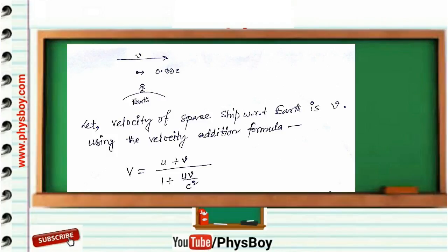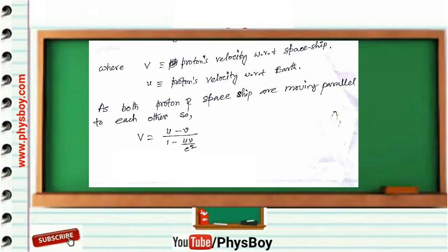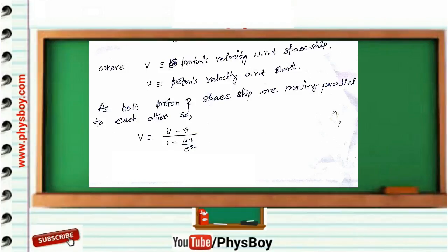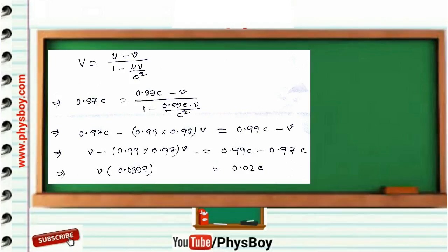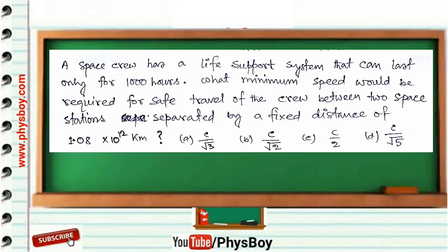We use the relativistic velocity addition formula: V = (u + v)/(1 + uv/c²), where V is the proton's velocity with respect to the spaceship and u is the proton's velocity with respect to Earth. Since both proton and spaceship are moving parallel toward Earth, we use: V = (u − v)/(1 − uv/c²). Putting in the values and solving, we get v = 0.5037c. Option C is the correct answer.